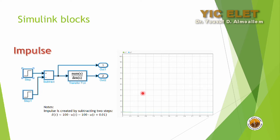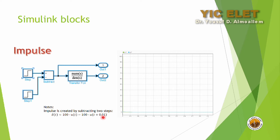Now we repeat the same simulations using Simulink blocks. For the impulse response, the block diagram creates an impulse by subtracting two step functions. Since this is continuous time, the impulse must be very narrow with an area equal to one. We make the second step lag slightly behind the first, so that their difference creates an approximation of an impulse. I used an amplitude of 100 and a shift of 1/100 seconds to make the area under the rectangular pulse equal to 1.